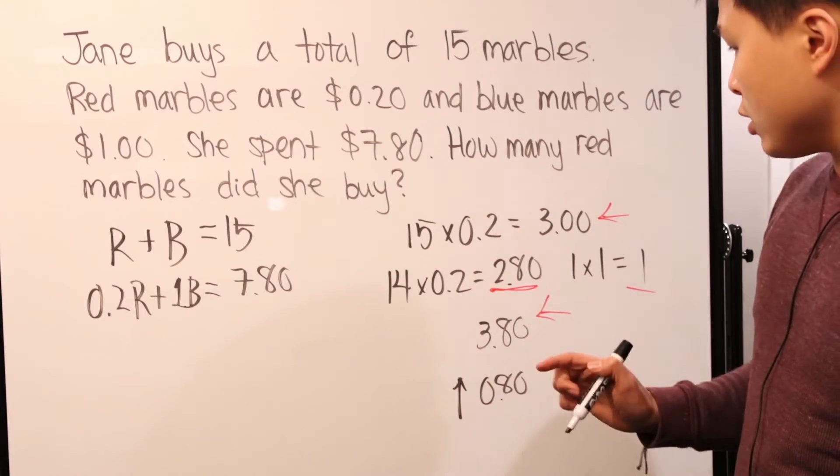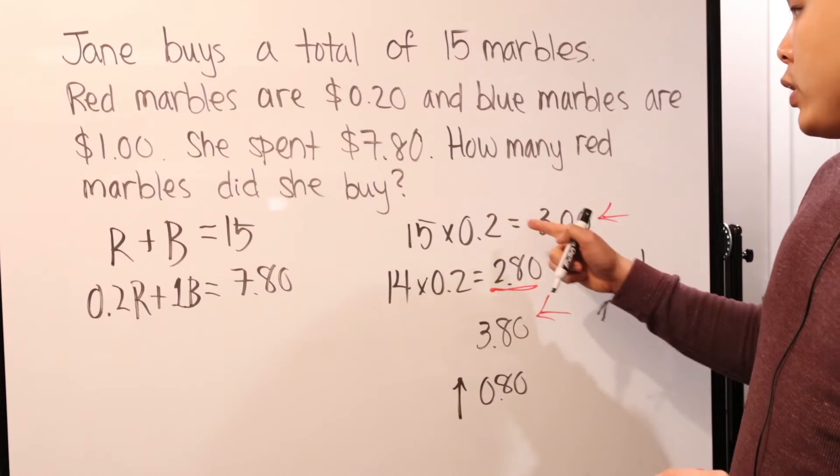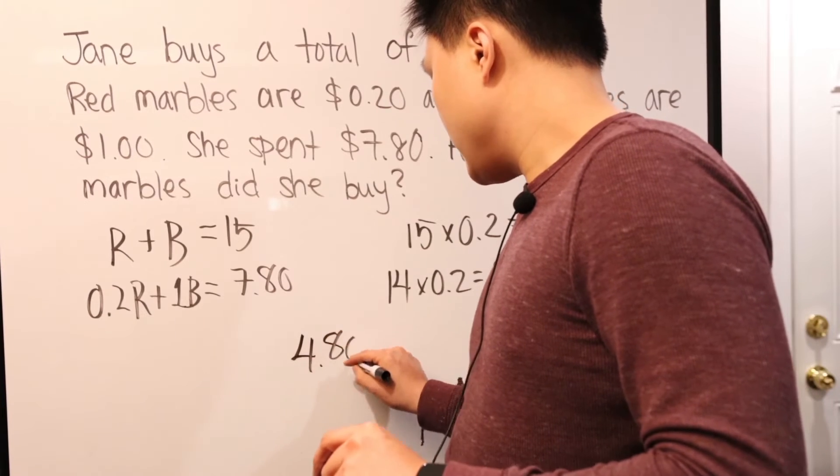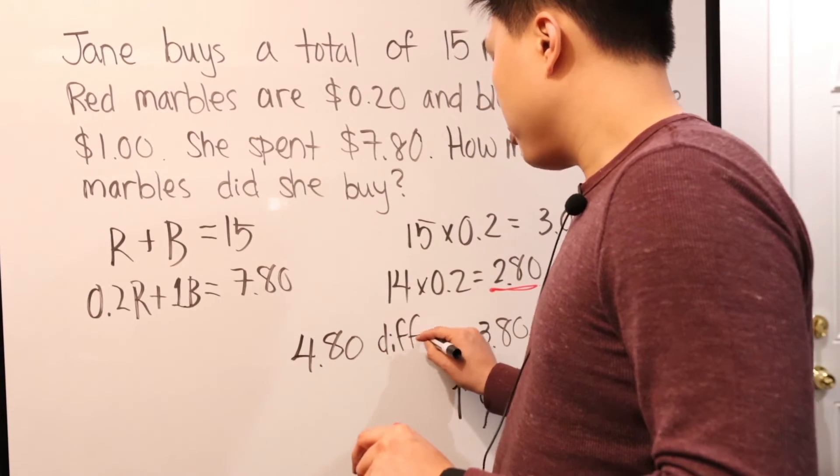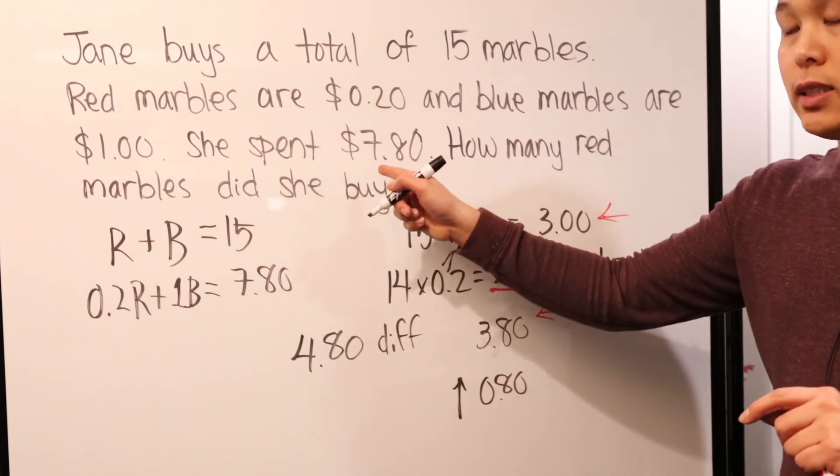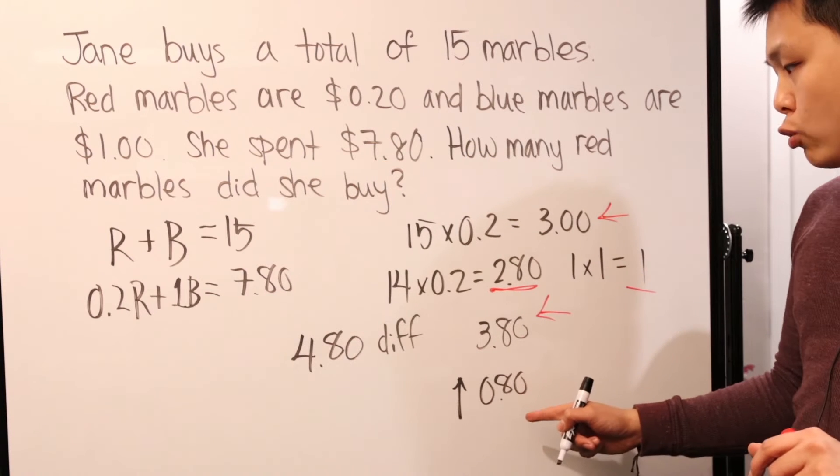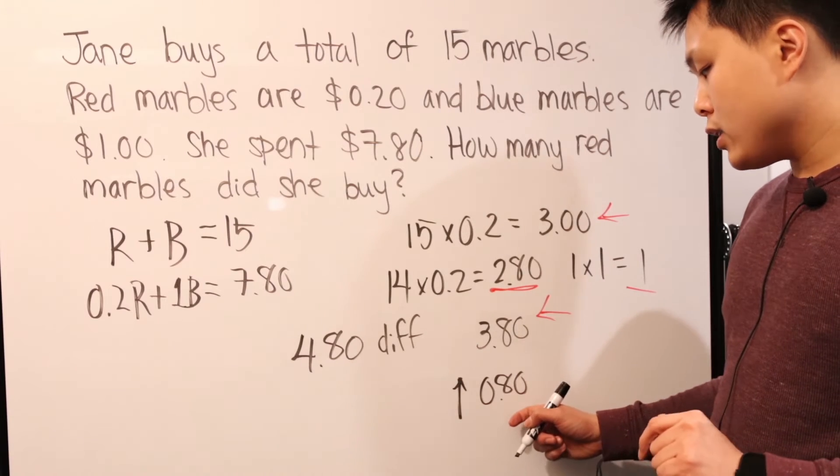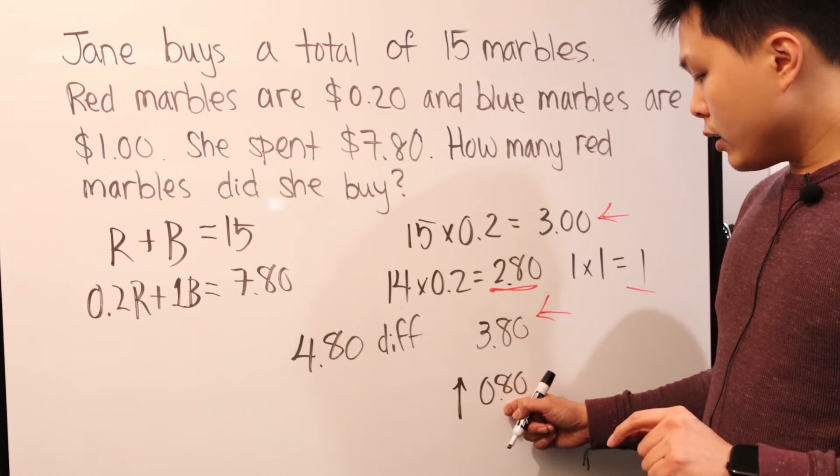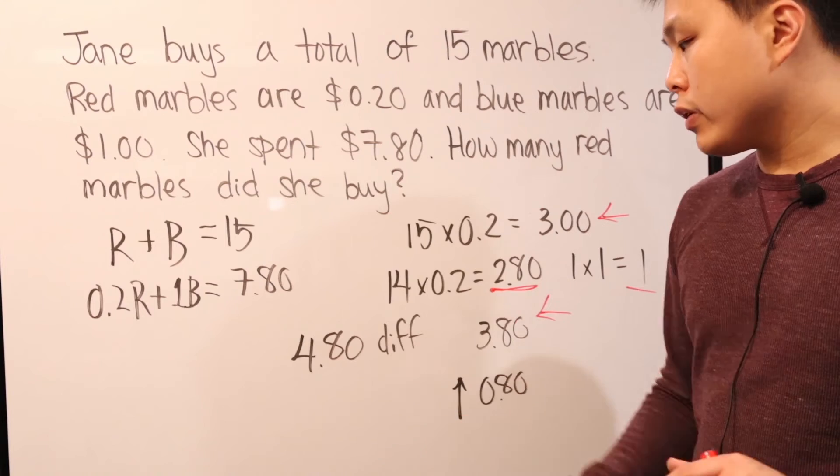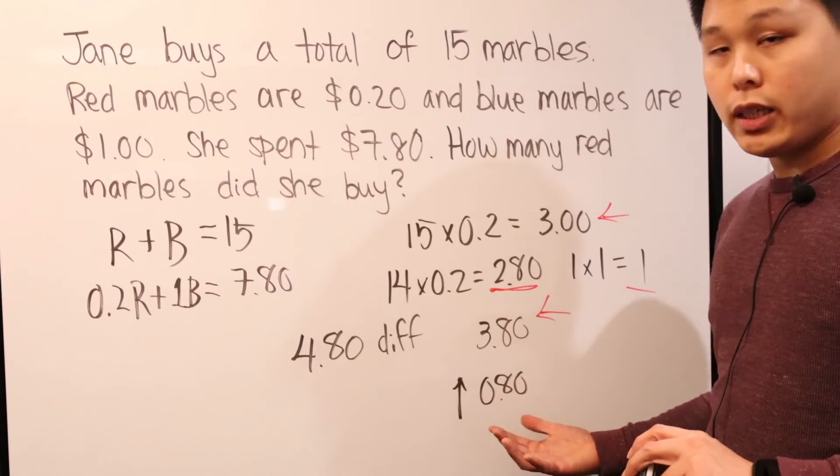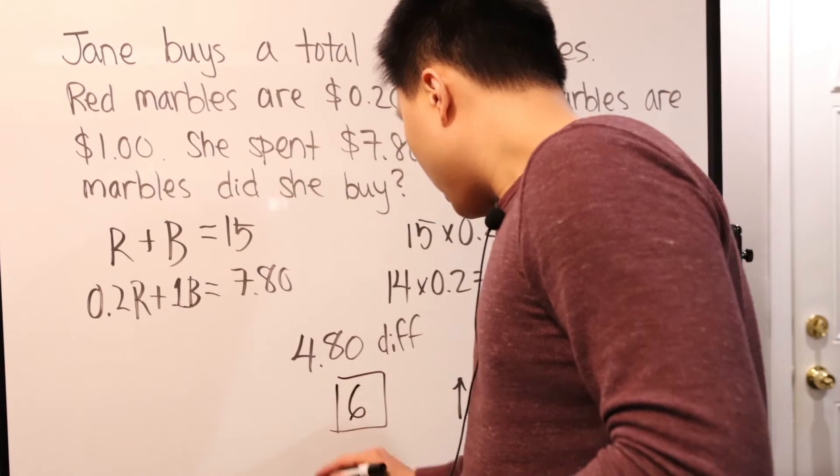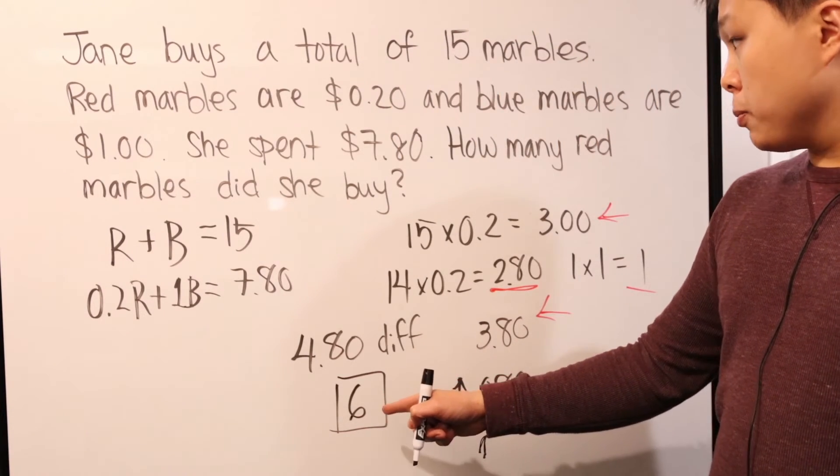We know that the difference between, well, $7.80 and $3 is $4.80. It's the difference. That's how much we're missing to make sure that she spent $7.80. Well, every time we change one of the red marbles into a blue marble, we're increasing it by $0.80. Well, if that's the case, figure out a number that $0.80 times whatever number it is will give us $4.80. Well, in this case, it's six. So we know from here, that means we had to change six of the red marble to blue marble.